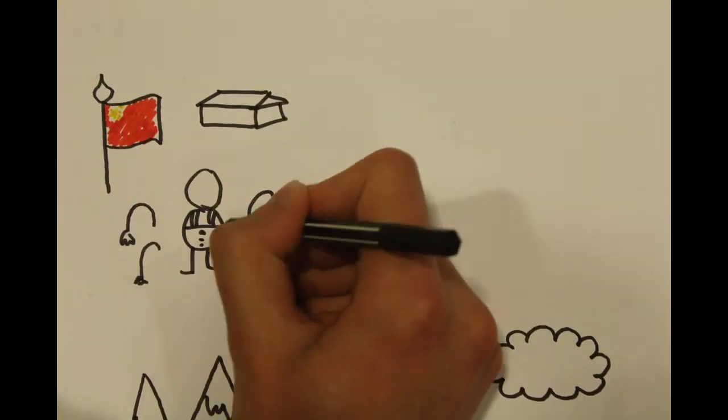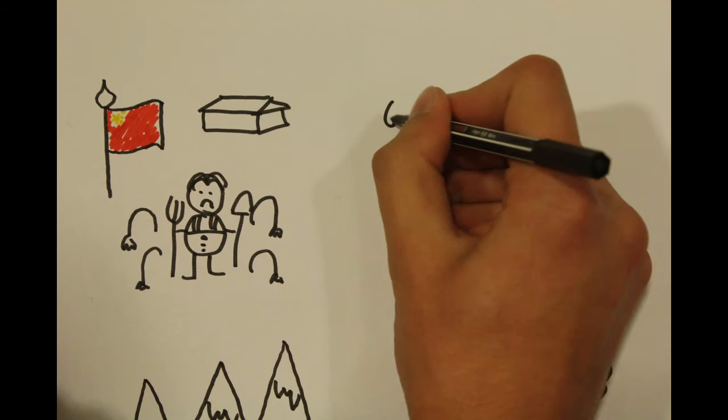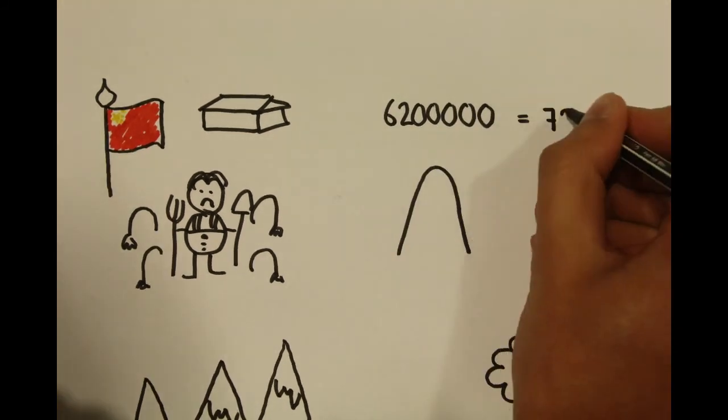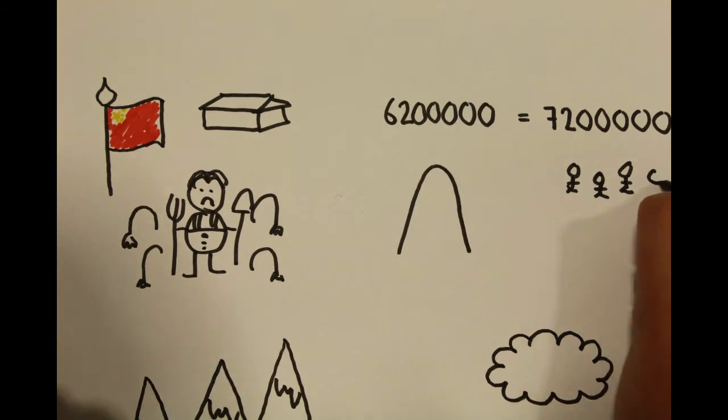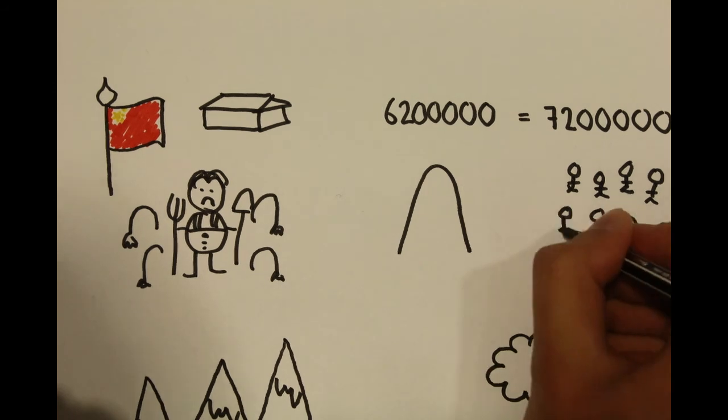For example, the rice output in some places in India is estimated to be 6.2 million tons lower than it would have been without the brown clouds. 6.2 million tons is enough to feed 72 million people.